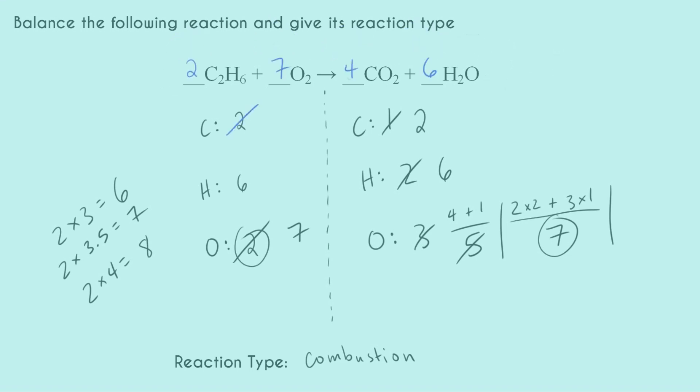And let's go ahead and make sure that everything is balanced. So I have two times two, four carbons, two times six, 12 hydrogens, seven times two, 14 oxygens, four times one, four carbons, six times two, 12 hydrogens. And now for oxygens, I have four times two plus six times one. So that gets me 14 oxygens. Great. And now everything is balanced and I don't have that decimal anymore.